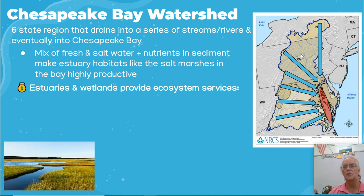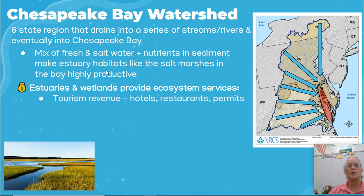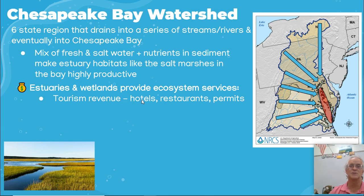Why is it so productive? Because it's getting all the nutrients from upstream. There are ecosystem services associated with estuaries and wetlands. For example, tourism revenue — you want to come see it because it's so beautiful, those beautiful birds — so you've got lots of people coming to hotels, going out to eat, maybe getting permits to go hunt or fish.